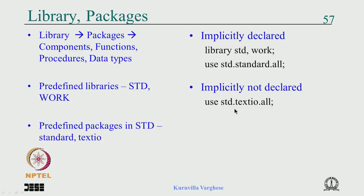The 'work' library is where your current design is compiled. Normally it is understood that without std and work no tool can work, so you do not have to say 'use std.standard.all' — this is implicit. But if you want to use textio from the std library, that is not implicitly declared, so you must write 'use std.textio.all'.